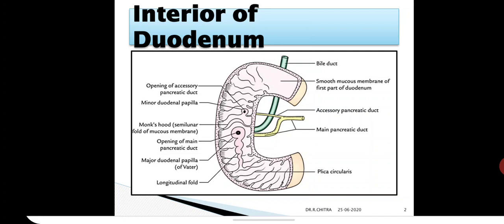Now you see the minor duodenal papillae. It is a small conical projection about 2 cm above and slightly ventral to the major papillae. The accessory pancreatic duct opens at its summit. So these are the two duodenal papillae in the second part of the duodenum.